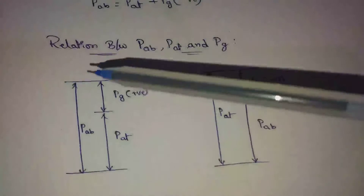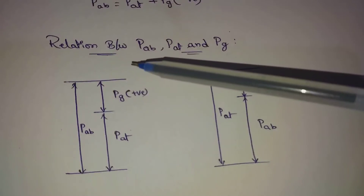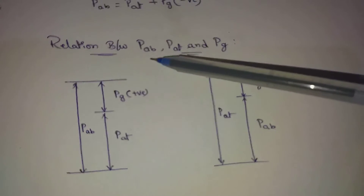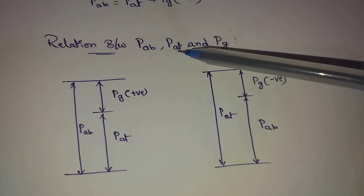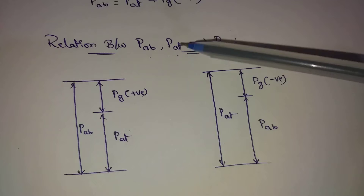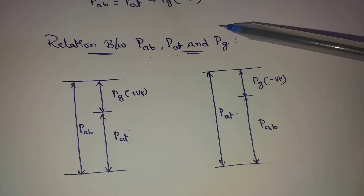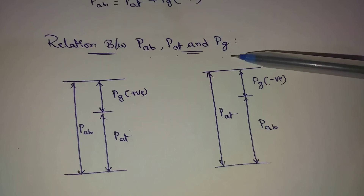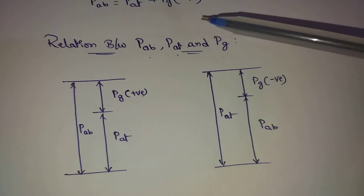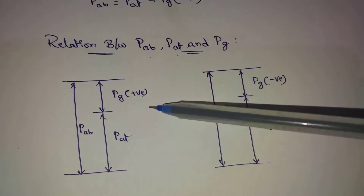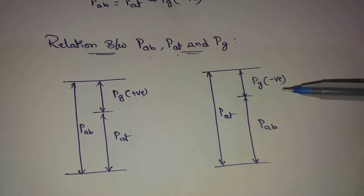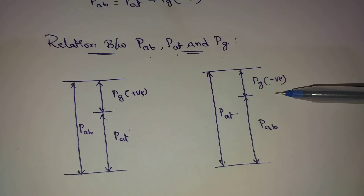Next topic: the relation between absolute pressure, atmospheric pressure, and gauge pressure. Gauge pressures are of two types: one is positive gauge pressure, and the second one is negative gauge pressure.